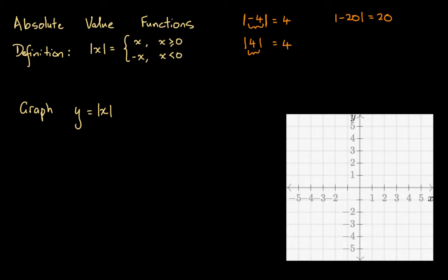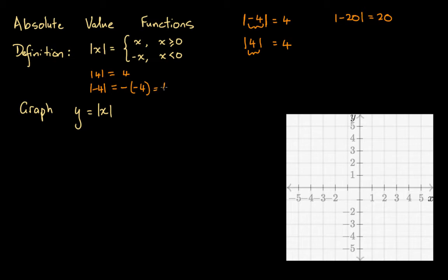The formal definition is this: if x is greater than or equal to 0, we have the value itself. Whereas if whatever is within the absolute value sign is less than 0, then we take the negative of that value. For instance, the absolute value of 4 — since 4 is greater than or equal to 0 — equals 4 itself. Alternatively, the absolute value of negative 4 — since negative 4 is less than 0 — is the negative of negative 4, and a negative times a negative is a positive, so this equals 4.